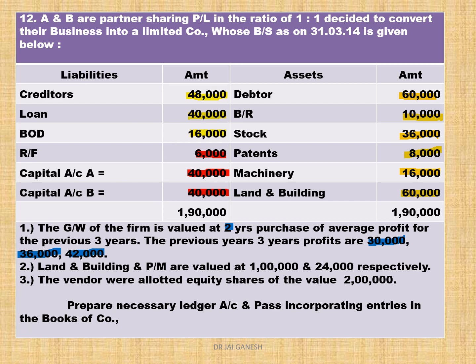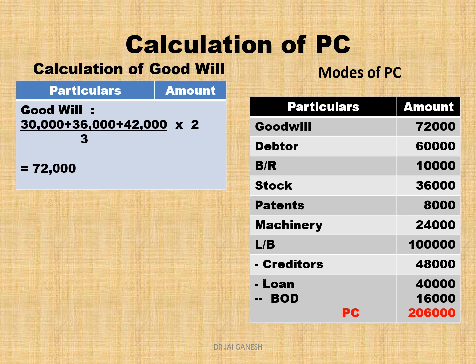Dividing 1,08,000 by three and multiplying by two, you get goodwill of 72,000. Land and building and plant and machinery are valued at 1,00,000 and 24,000 respectively — do not take the balance sheet figures; take the adjusted figures. The vendors were allotted equity shares of the value of two lakhs. Goodwill is calculated as: average profit = (30 + 36 + 42) ÷ 3 × 2 = 72,000.